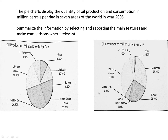Now let's group the information. These are the regions where production is more, and these are the regions with down arrows where production is less and consumption is more. In the overview, you can write about both of these groups.